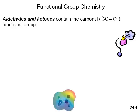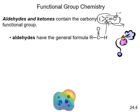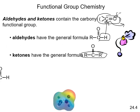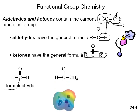Aldehydes and ketones both contain the carbonyl functional group (C=O). Oxygen is partially negative and the carbon becomes partially positive, allowing it to attract negative species and drive further chemistry. Aldehydes must have a hydrogen on the carbonyl carbon. The simplest aldehyde is methanal, or formaldehyde. A two-carbon aldehyde is ethanal, also called acetaldehyde. Ketones have two carbon-containing groups on either side of the carbonyl; the simplest is propanone, or acetone.